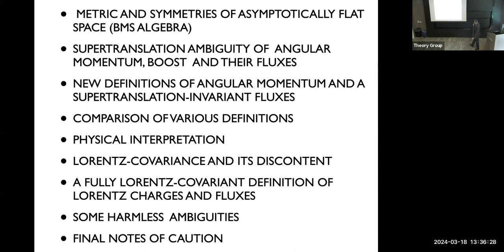The plan of the talk is as follows. I will introduce the notations — things that probably you know very well. I will write an asymptotically flat metric in a convenient form in a particular coordinate system and use that to describe the asymptotic symmetries of this metric. This asymptotic symmetry contains quantities that we know very well, like energy and angular momentum, and also others. There are generators of other symmetries called supertranslations. They give rise to an ambiguity in the definition of angular momentum and also in the definition of the flux of angular momentum and the other Lorentz charges — boosts.